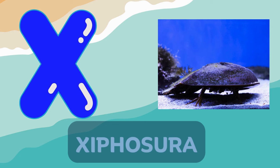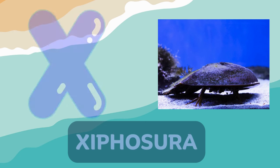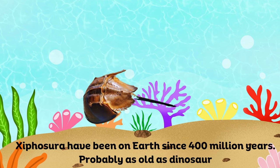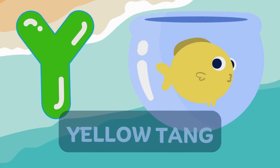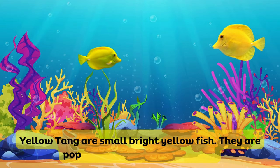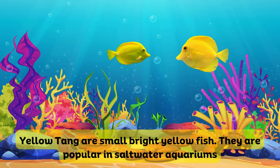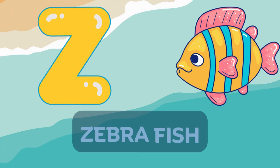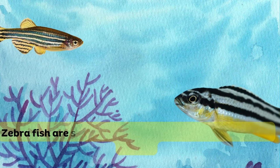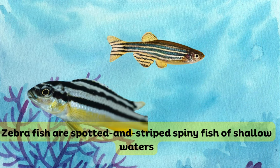X for Xiphosura. They are the longest-living animals. Y for Yellow Tang. Yellow Tang are small, bright yellow colored fish. Z for Zebrafish. Zebrafish have spots and stripes on them.